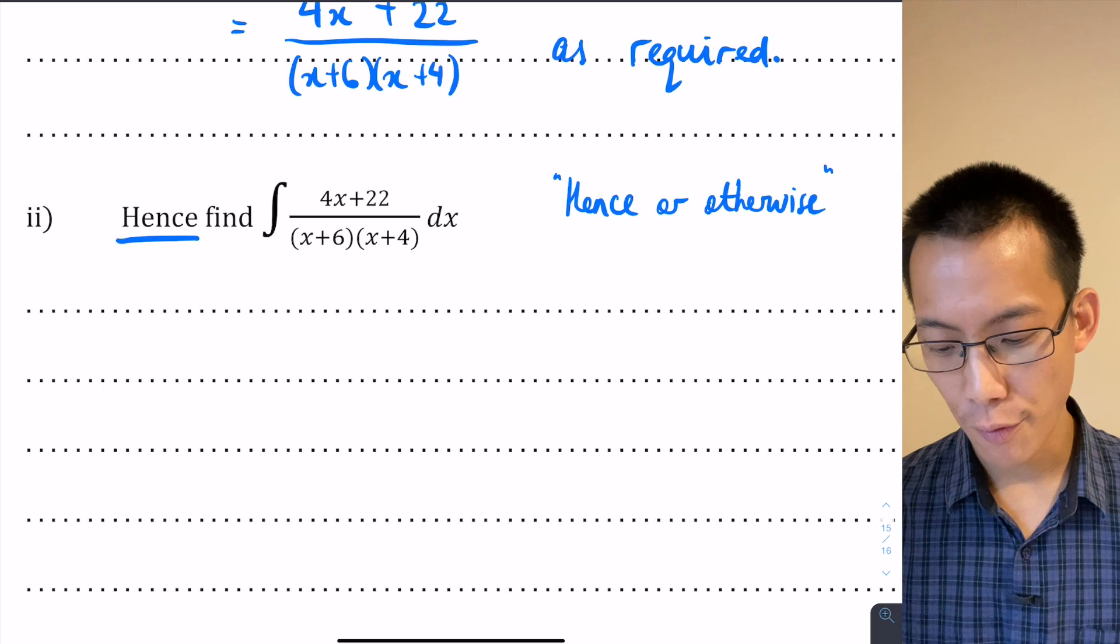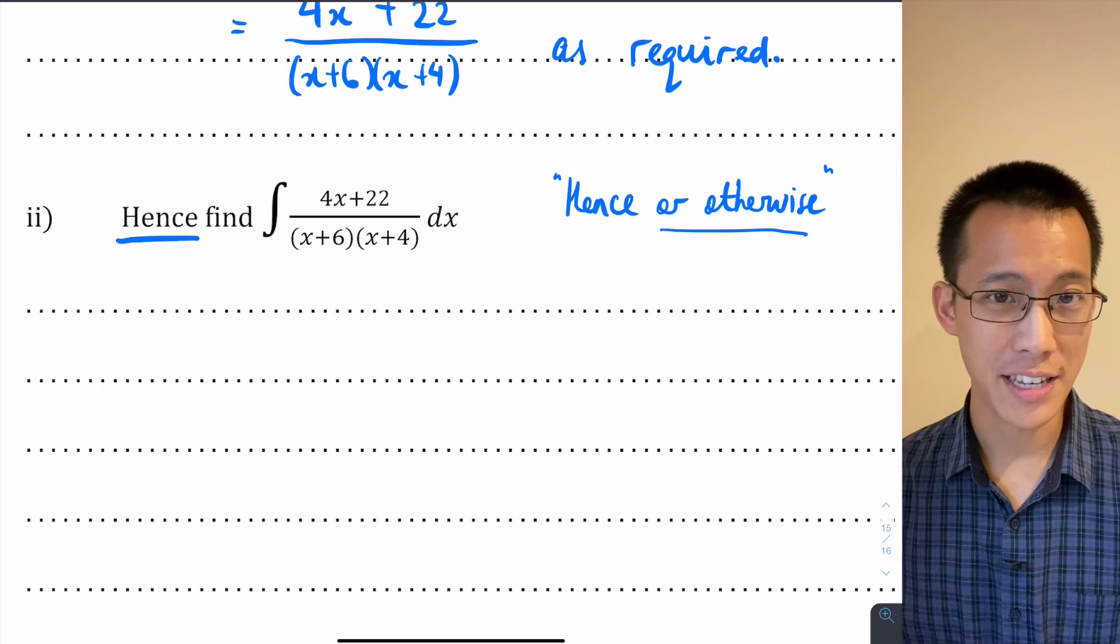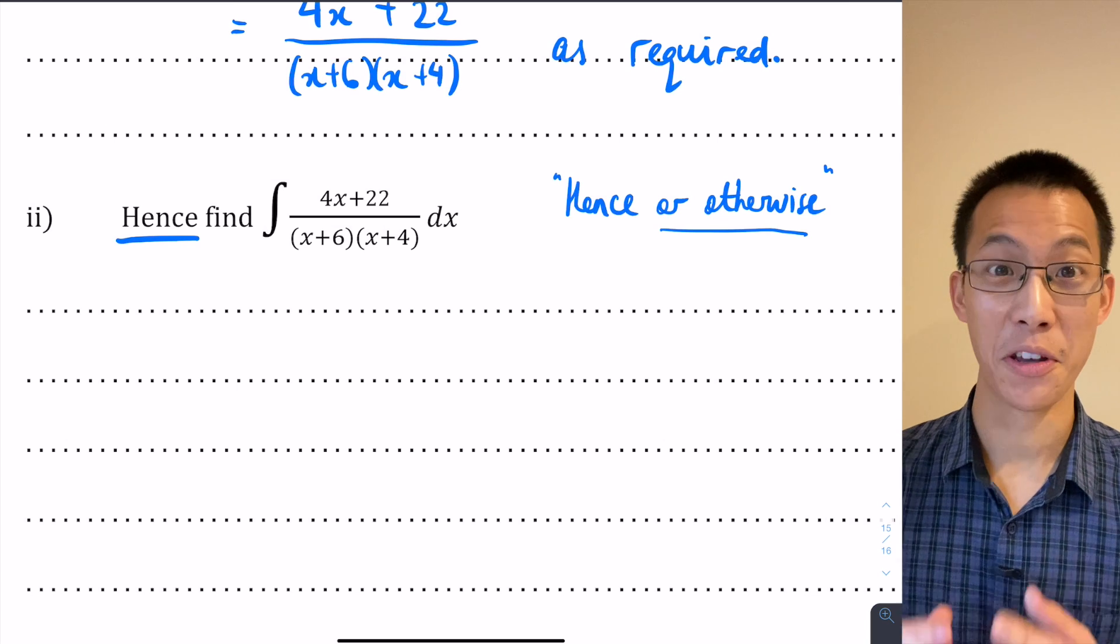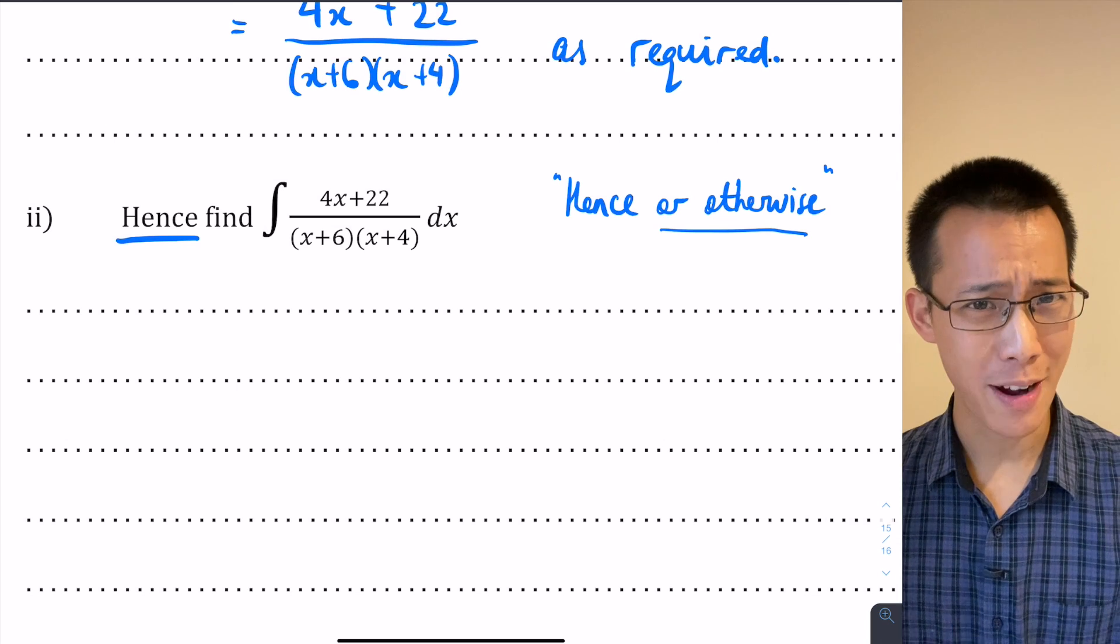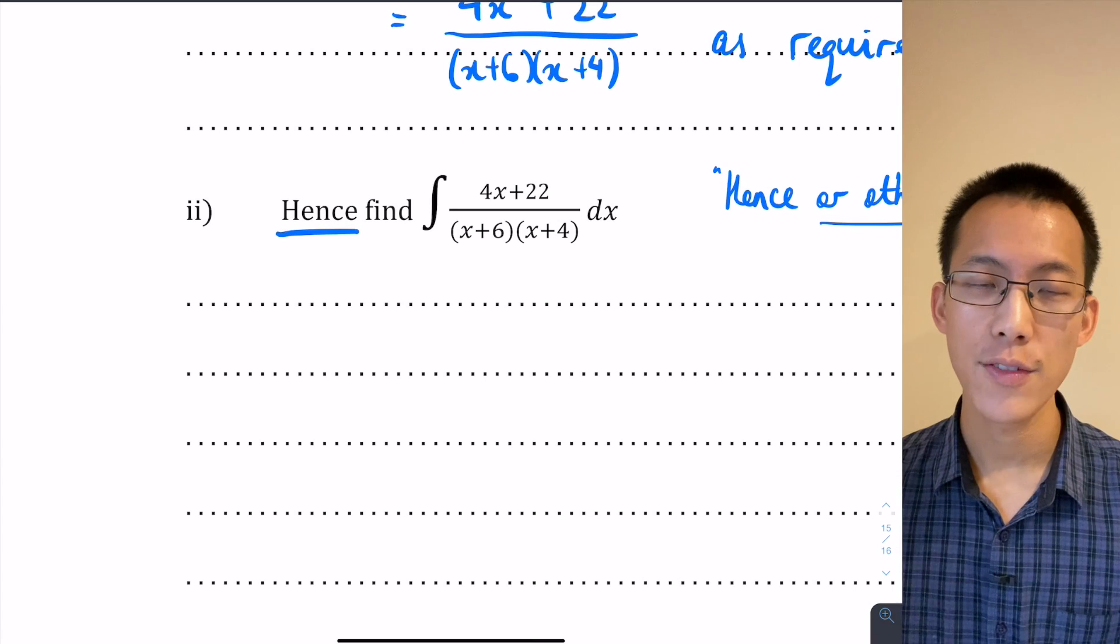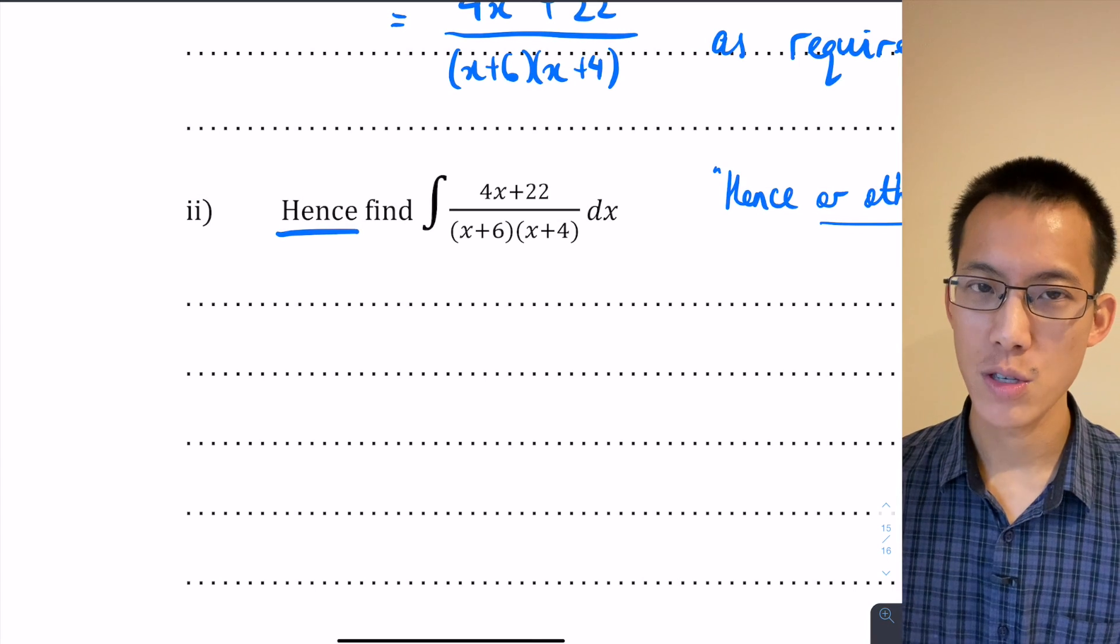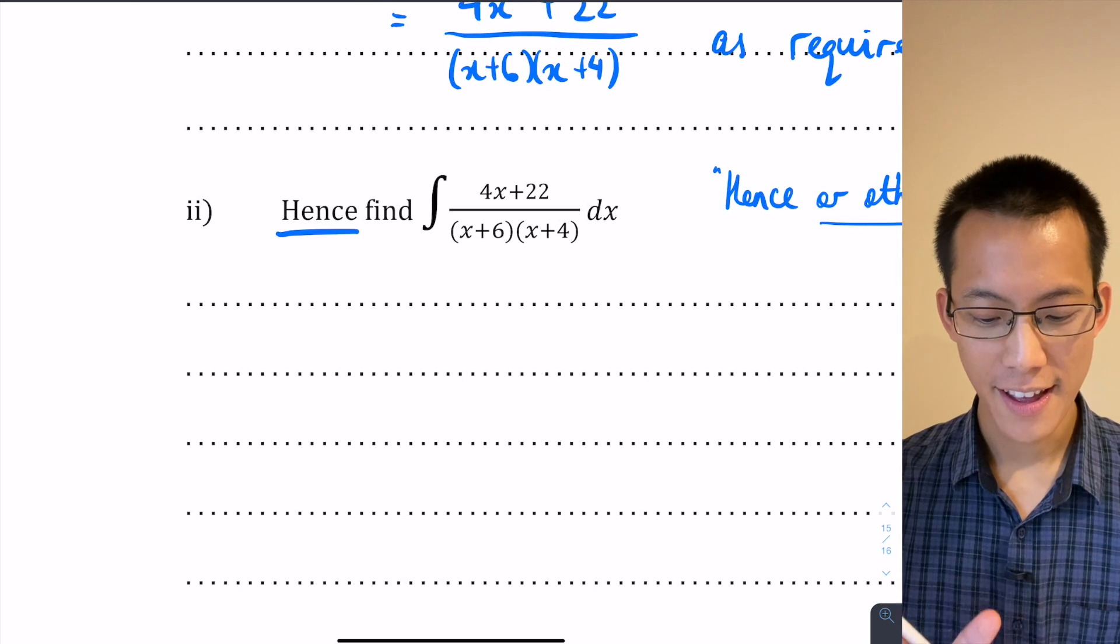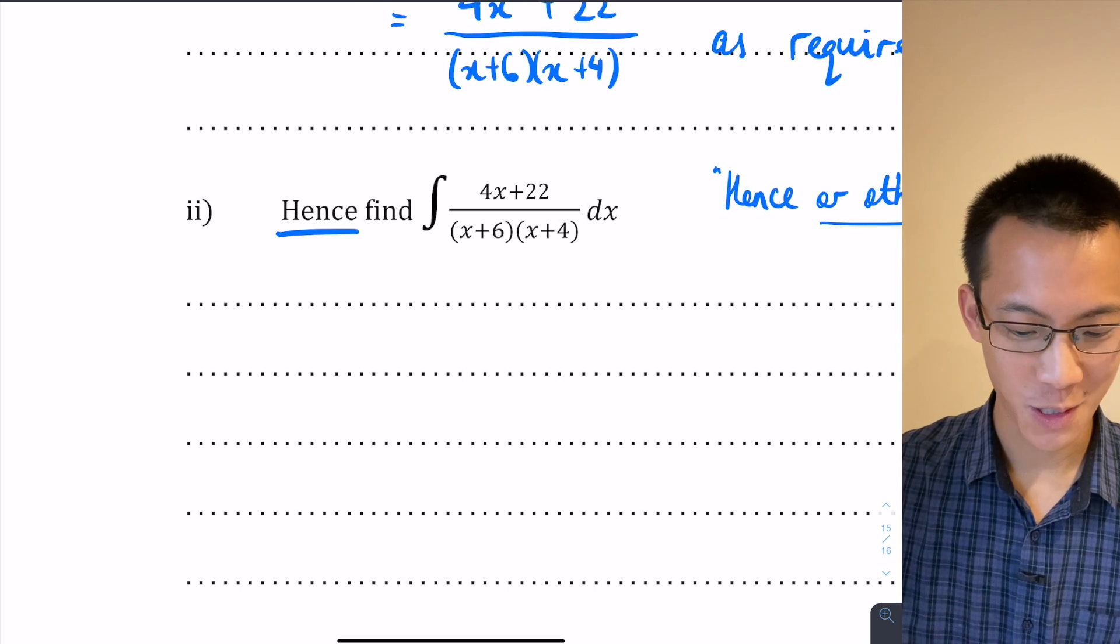When you see "hence," what that means is the thing you just showed, that result that came from the earlier part, you need to use that. When you see the phrase "or otherwise," what they're essentially saying is if you've got some other wonderful way to solve this problem, then go for it. But otherwise we're trying to give you a nudge in the right direction. This question here, part 2, just says "hence." That means it doesn't give you an option—you absolutely must use part 1 in order to solve part 2.